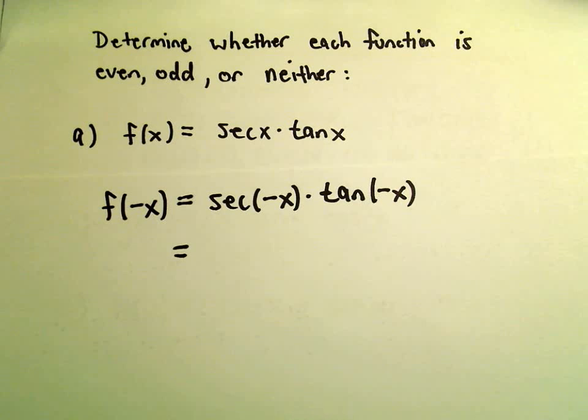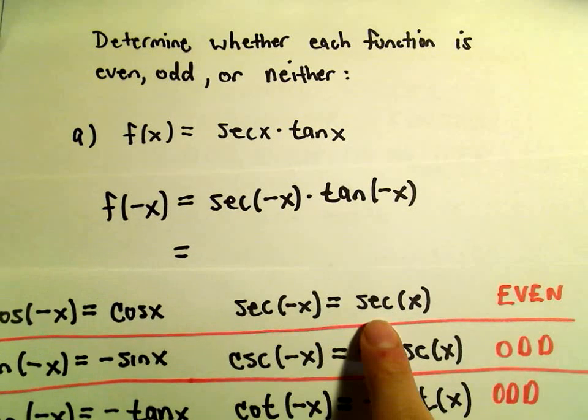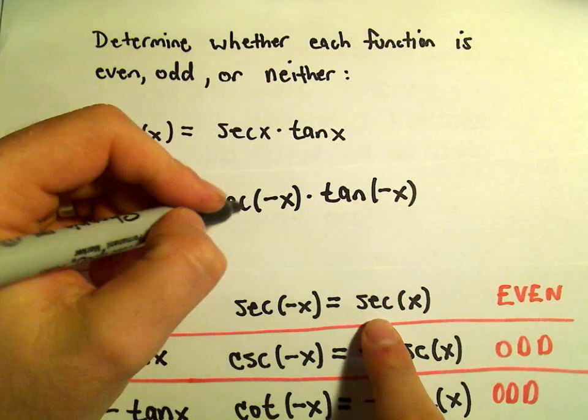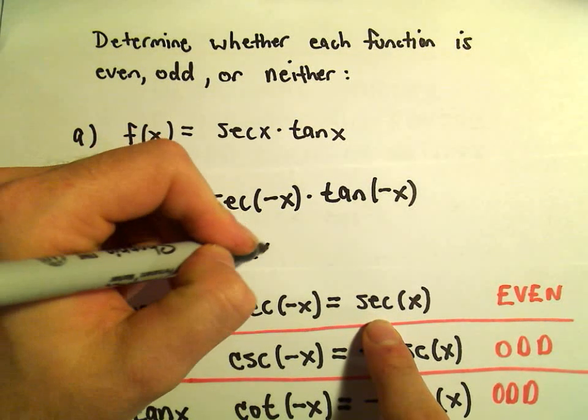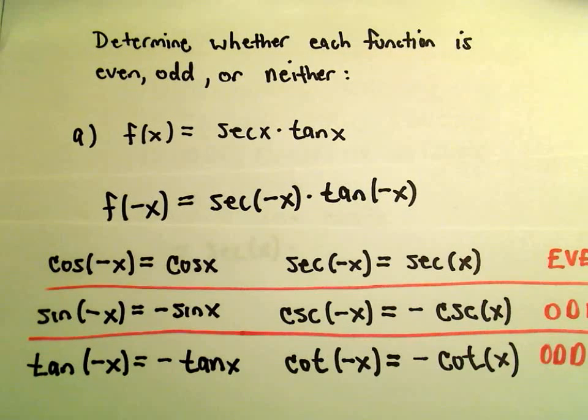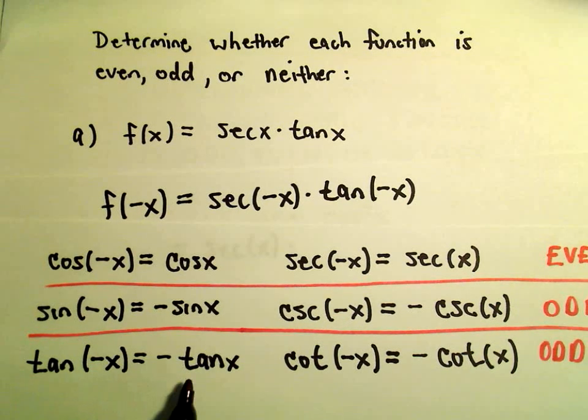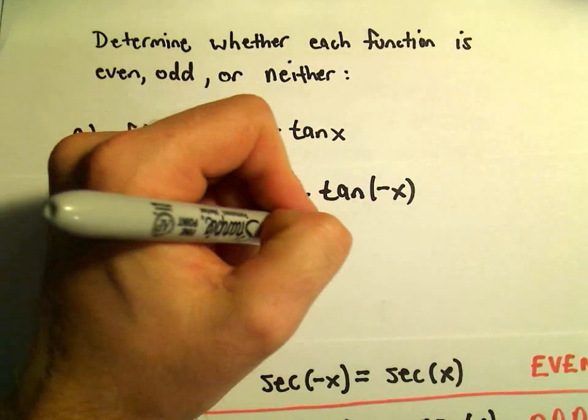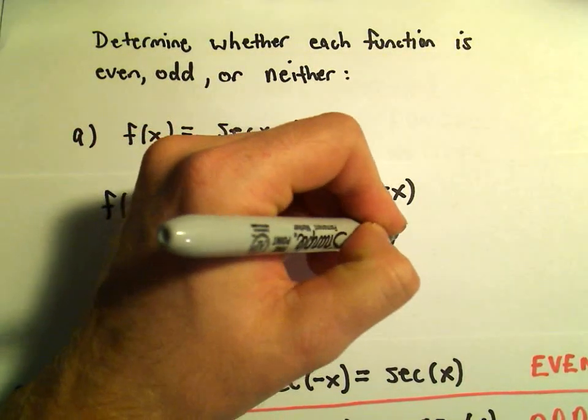If you remember in terms of these being even, odd, or neither, we said that secant of negative x can be replaced with just secant x. And tangent of negative x can be replaced with just the negative of tangent of x.